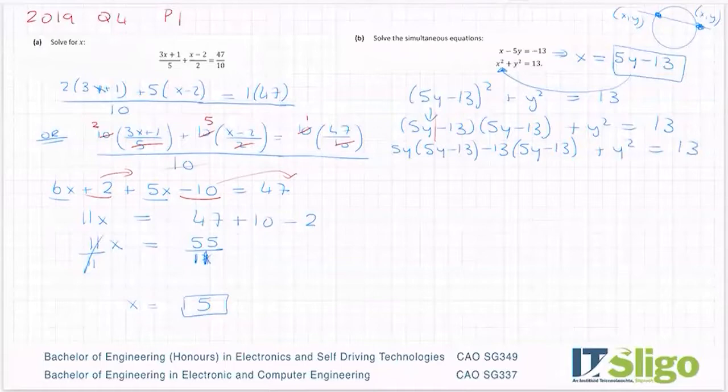And then go back multiplying. So 5y by 5y, 25y², 5y by -13 is -65y, -13 by 5y is -65y, minus by minus is a plus, 13 by 13 is 169 +y² = 13.